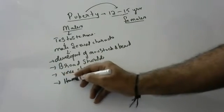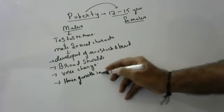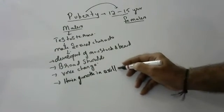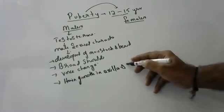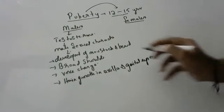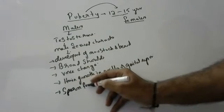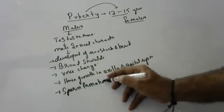And hair growth will be there, hair growth in axilla, armpits and genital regions. And sperm formation takes place, sperm formation starts taking place.